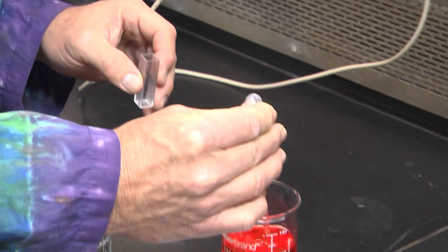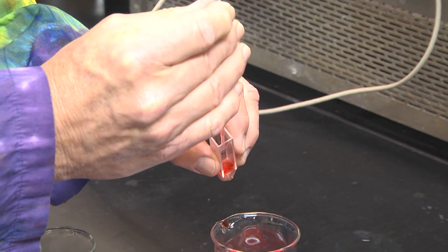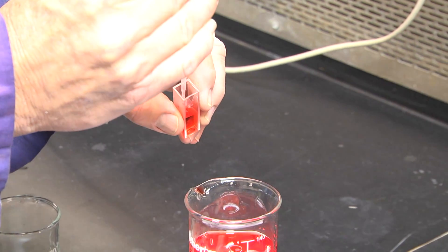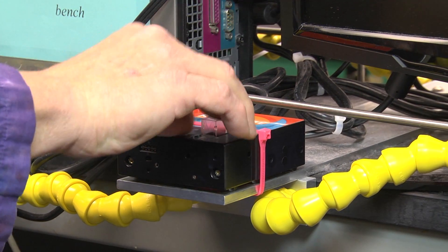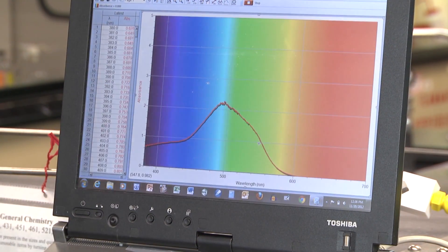Next, remove an aliquot of the reaction mixture and put it in a cuvette. Put the cuvette in a previously calibrated spectrometer. Now you can read and record the absorbance as a function of time.